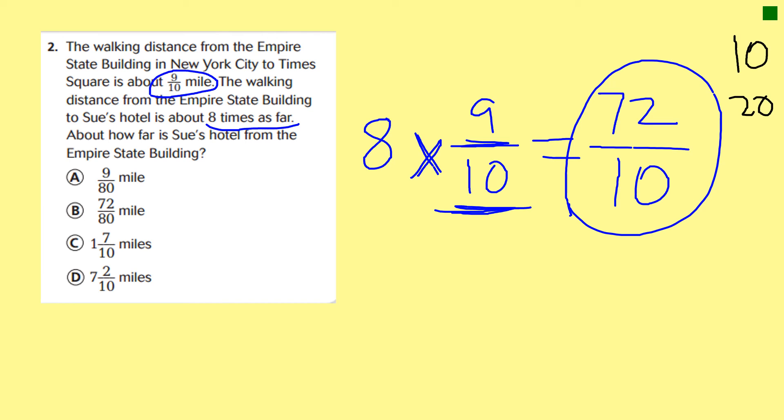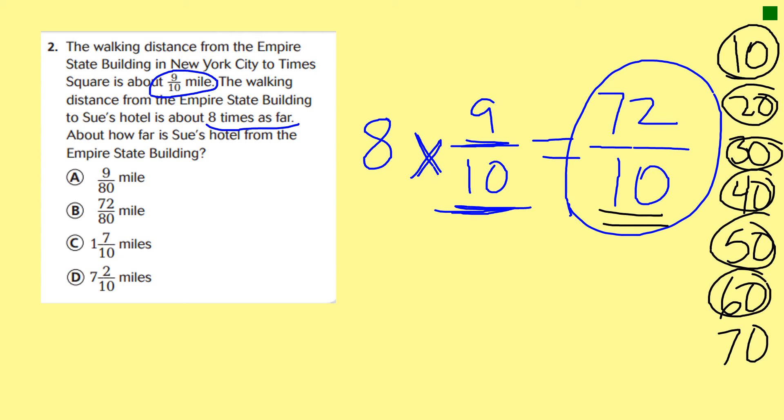All right, so 10, 20, 30, 40, 50, 60, 70. Can we go to 80? No we can't. So for every set of 10 that's one whole - one, two, three, four, five, six, seven. Okay, so that's seven whole miles.